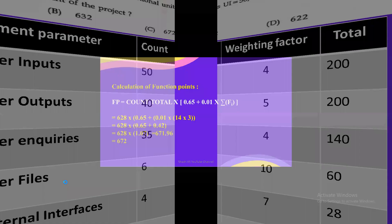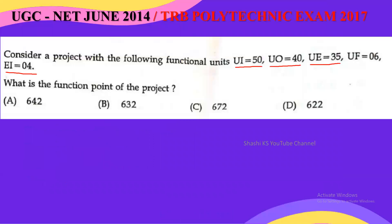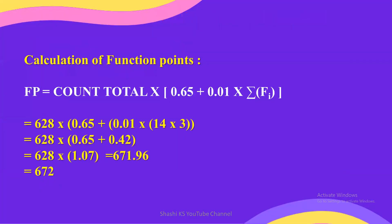Looking back at the question, four answer options are given, and the right answer is 672. So we have now learned how to calculate function points. Function points is a unit of measurement to measure the business functionality of a software product, and this value helps us assess how much functionality is provided by the software.